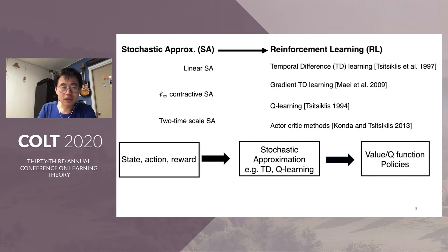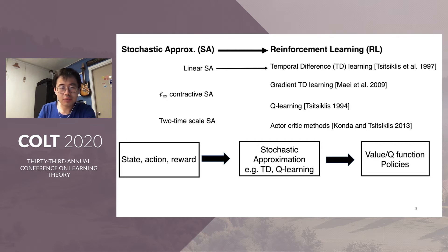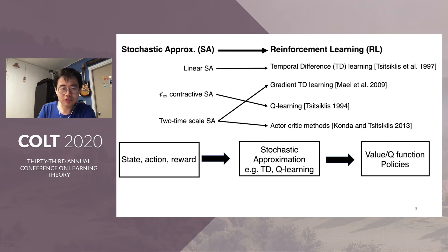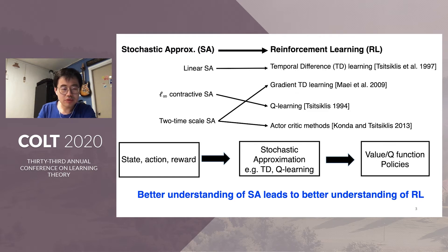For example, stochastic approximation underlies many reinforcement learning algorithms. Linear stochastic approximation is the underlying force beneath temporal difference learning. A class of L-infinity contractive stochastic approximation is behind Q-learning. And a class of two-timescale stochastic approximation is the underlying method behind actor-critic methods and gradient TD algorithms. An improved understanding of stochastic approximation can lead to better understanding of reinforcement learning algorithms.